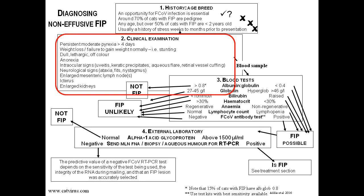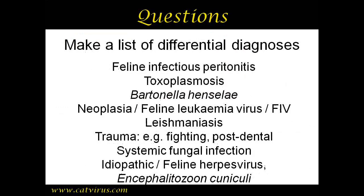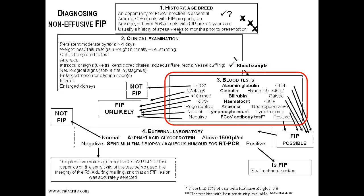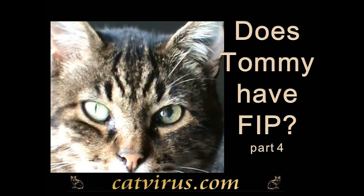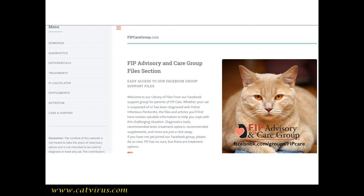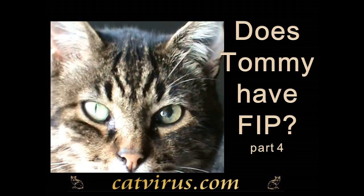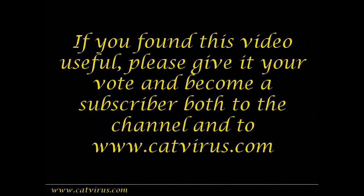This video is about uveitis and about Tommy's case. At the end of this third video, we now have a list of differential diagnoses. In the next video we're going to look at his in-house blood results, which is the next step of the FIP diagnostic flow chart, then go through this differential diagnosis list trying to narrow it down, so that we can send the most efficient samples possible to a referral laboratory to establish his diagnosis and the best course of treatment. I want to dedicate this video to Fabienne and the members of the FIP Advisory and Care Group. Thank you for your support, and I hope you'll join me in the next video.